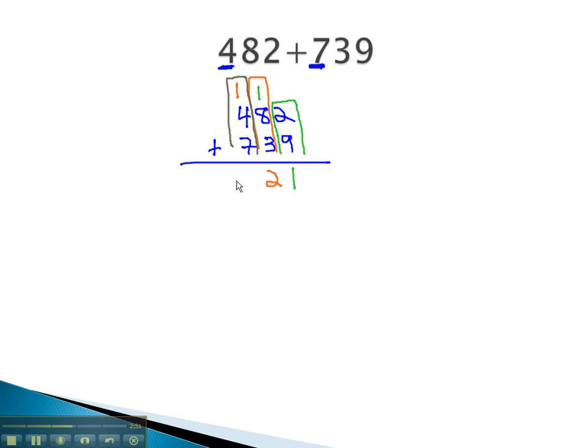Finally, 4, 7, and 1 is 15. Oops, no it's not. 4, 7, and 1 is 12. Sorry. With nothing left to carry, this becomes our final solution, 1,221.